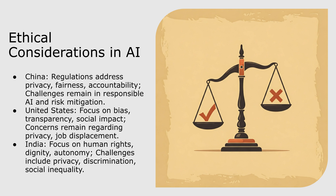How is each country thinking about ethical considerations? China's regulations address privacy, fairness, and accountability in AI, but challenges remain in ensuring responsible AI and mitigating risk. The US is focusing on bias, transparency, and the social impacts of AI, with concerns about privacy and job displacement. India prioritizes human rights, dignity, and autonomy in AI, while facing challenges related to privacy, discrimination, and social inequality.